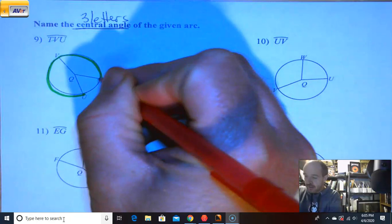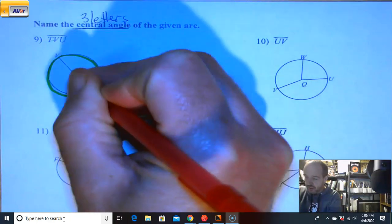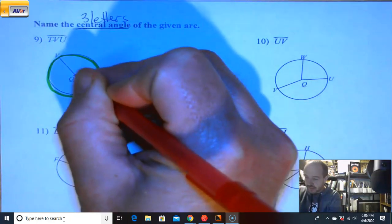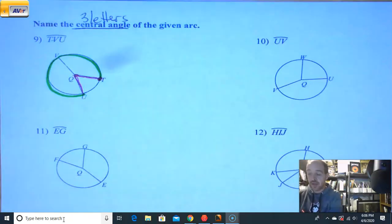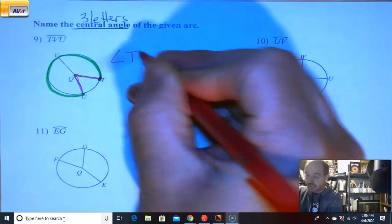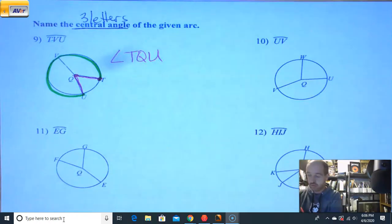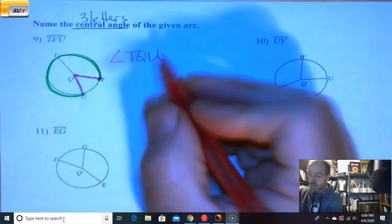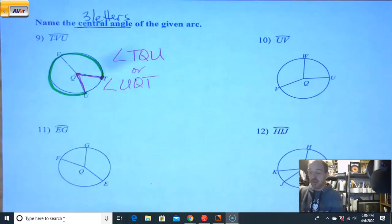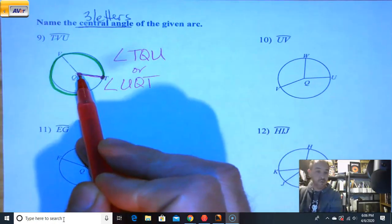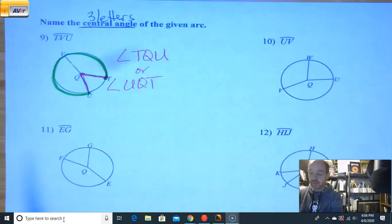But to name the central angle of it, we're just going to follow. From one side, we're going to follow our way into the middle to our vertex, and then we're going to follow back to the outside to where our arc ends. And then we're just going to name the angle. So we could name this angle T, Q, U. Or we could name this angle U, Q, T. But Q has to be in the middle. Vertex, always in the middle. Notice Q is in the middle of both of these. And that's all I'm really looking for.